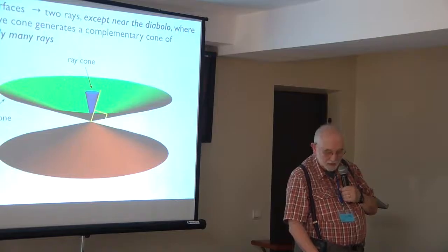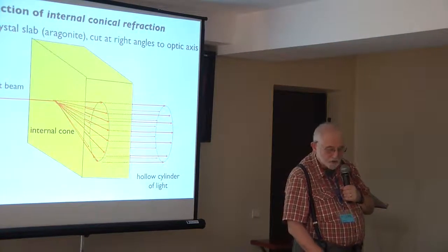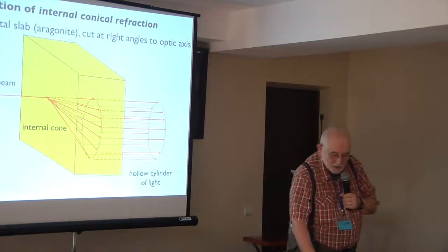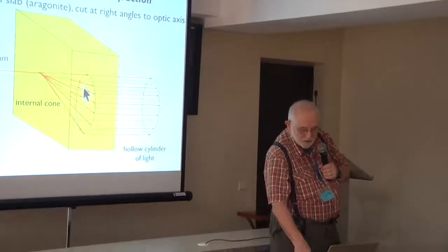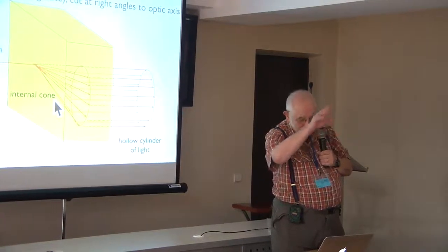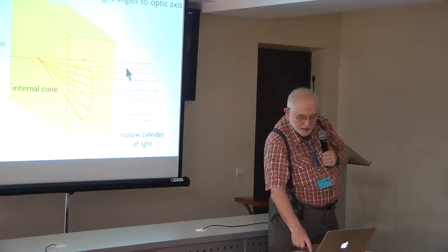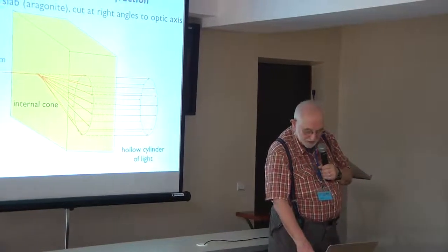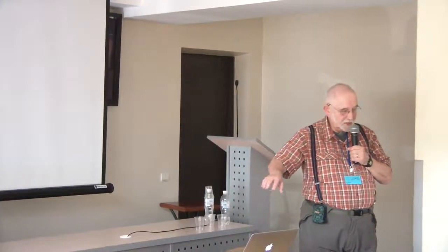Now Hamilton realized you could see this if you took a crystal, cut it at right angles to one of these directions, they're called optic axes, and shone a beam of light in, and you get a cone inside, it's sideways, never mind why. And then when it came out again, it would be refracted into a hollow cylinder which you would see as a bright ring. This was observed by Humphrey Lloyd. Now when you do this experiment, this is the experiment that I did with my student Mike Jeffrey, if you observe this, you never quite get the direction.